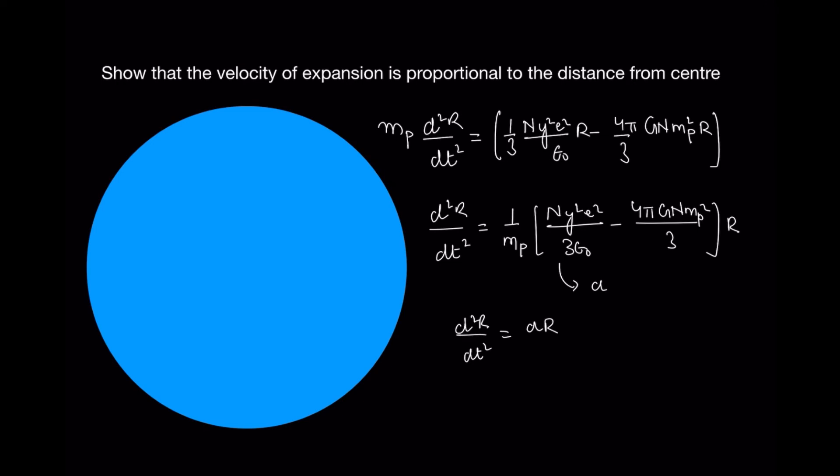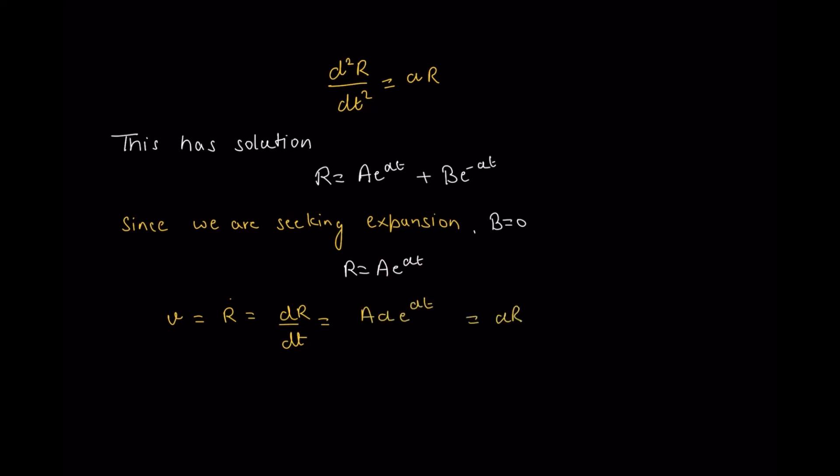My differential equation is d²r/dt² = αr. For this type of equation, the solution is r = ae^(αt) + be^(-αt). Since we're looking for expansion and the term be^(-αt) is responsible for contraction, I'll put b = 0. So r = ae^(αt), and v = dr/dt = aαe^(αt) = αr. My velocity is directly proportional to r, and with this my problem is over. Thank you for watching.